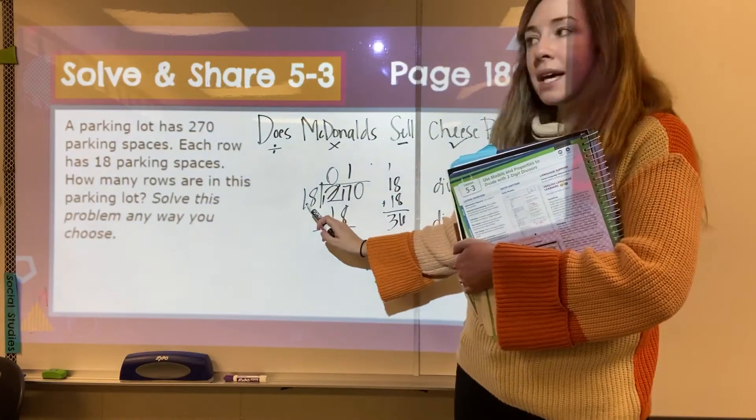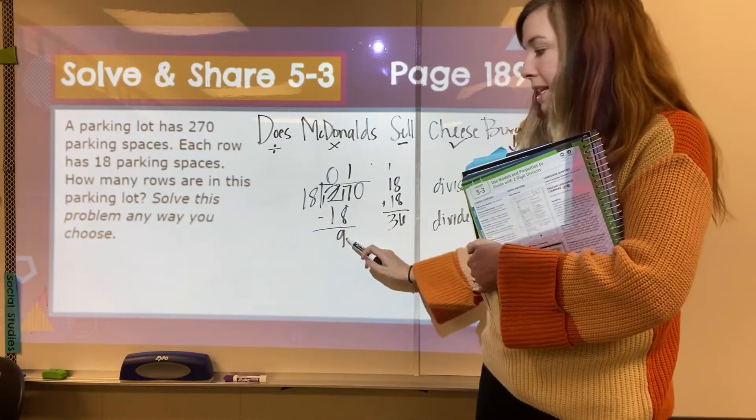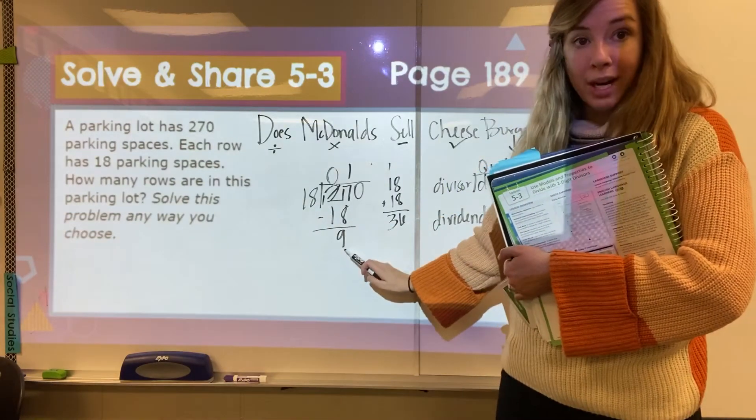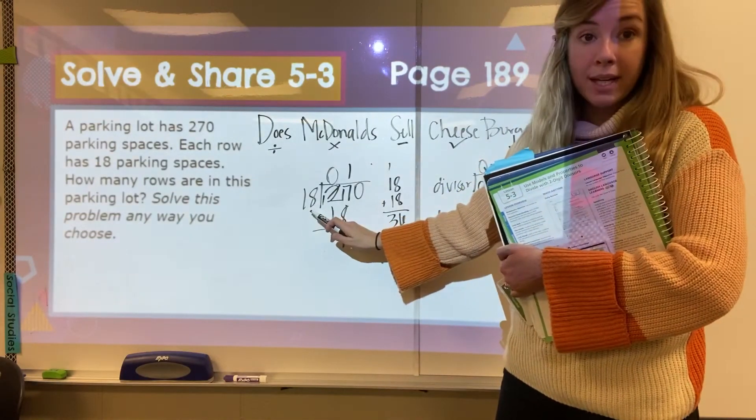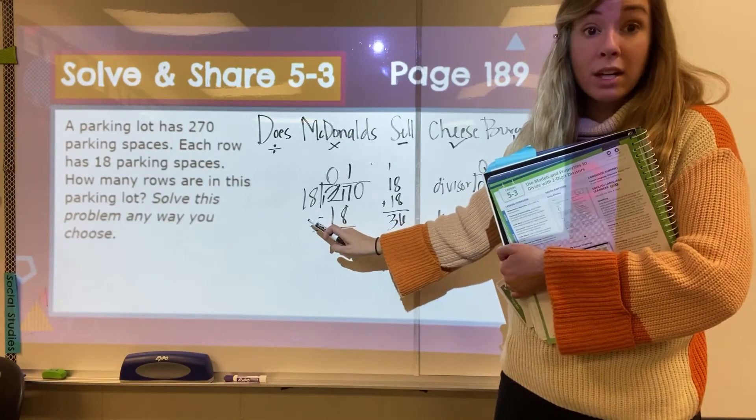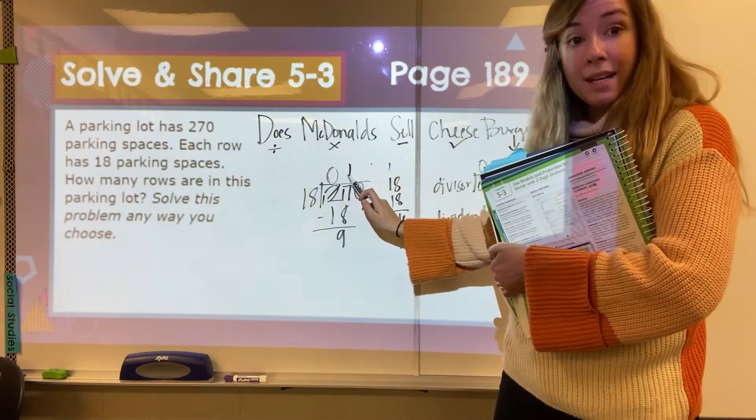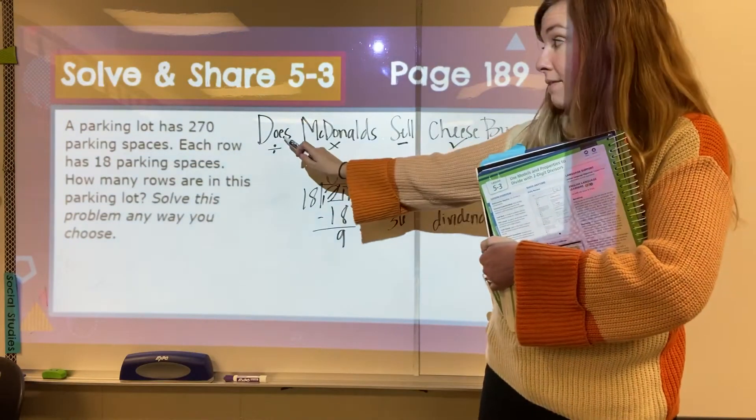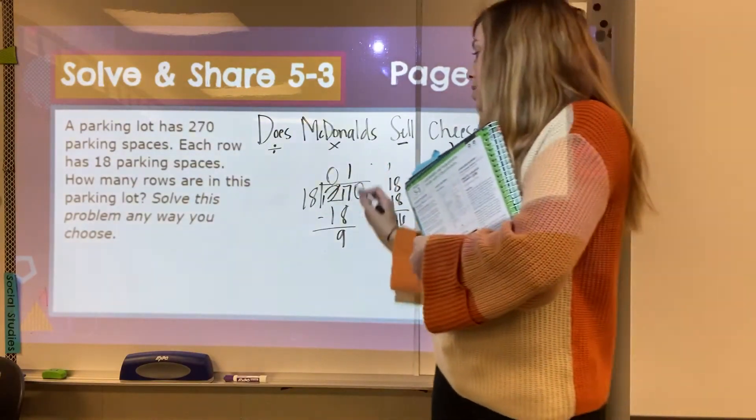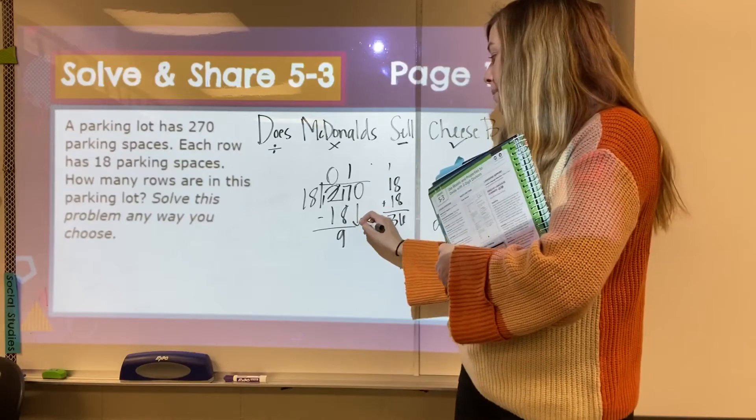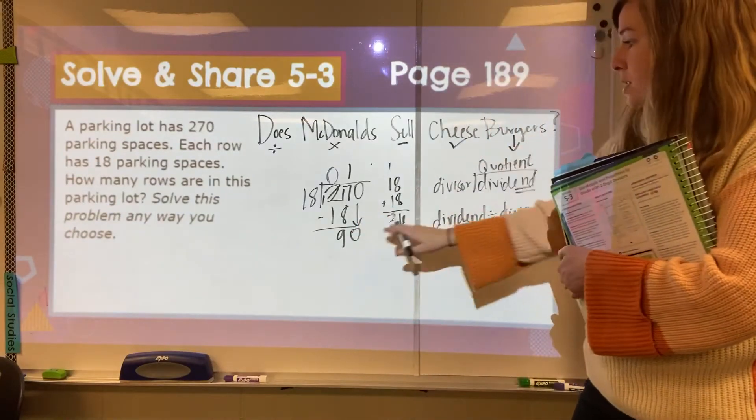So now I check. Is 9 less than my divisor of 18? If the number you get when you subtract is larger than your number out here, you have done something incorrect. You might have subtracted wrong. You might have not put it in enough times. Divided it in enough times back on step 1. So yes, it's smaller. So now I'm going to bring down my next number, which is a 0.